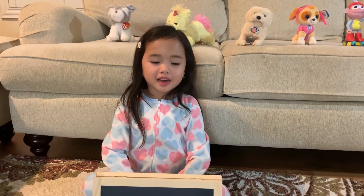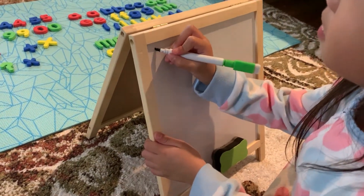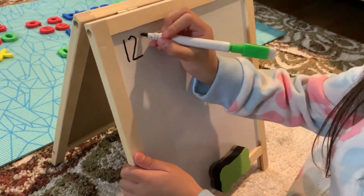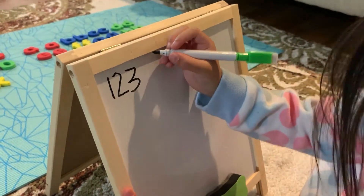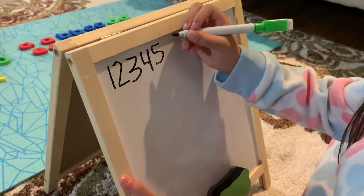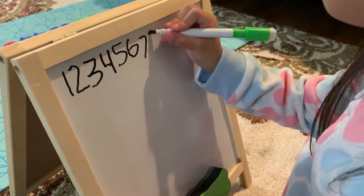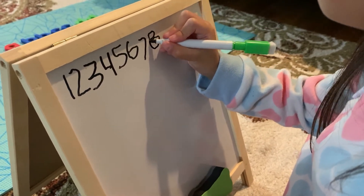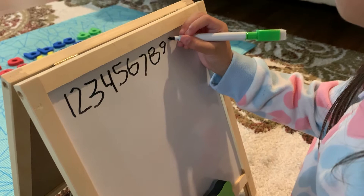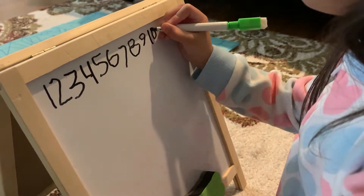Now I will write the numbers. A, B, C, D, E, F, G, H, I, J, K, L, M, N, O, P, Q, R, S, T, U, V, W, X, Y, and Z. Now I know my ABCs. Next time won't you sing with me.